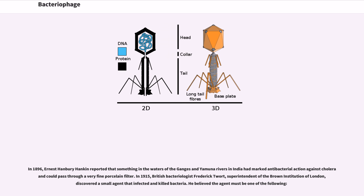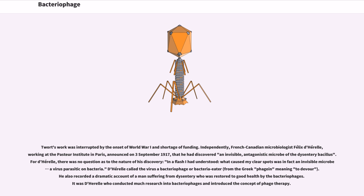Twort's work was interrupted by the onset of World War I and shortage of funding. Independently, French-Canadian microbiologist Félix d'Hérelle, working at the Pasteur Institute in Paris, announced on September 3, 1917, that he had discovered an invisible, antagonistic microbe of the dysentery bacillus. For d'Hérelle, there was no question as to the nature of his discovery: 'In a flash I had understood — what caused my clear spots was in fact an invisible microbe, a virus parasitic on bacteria.'